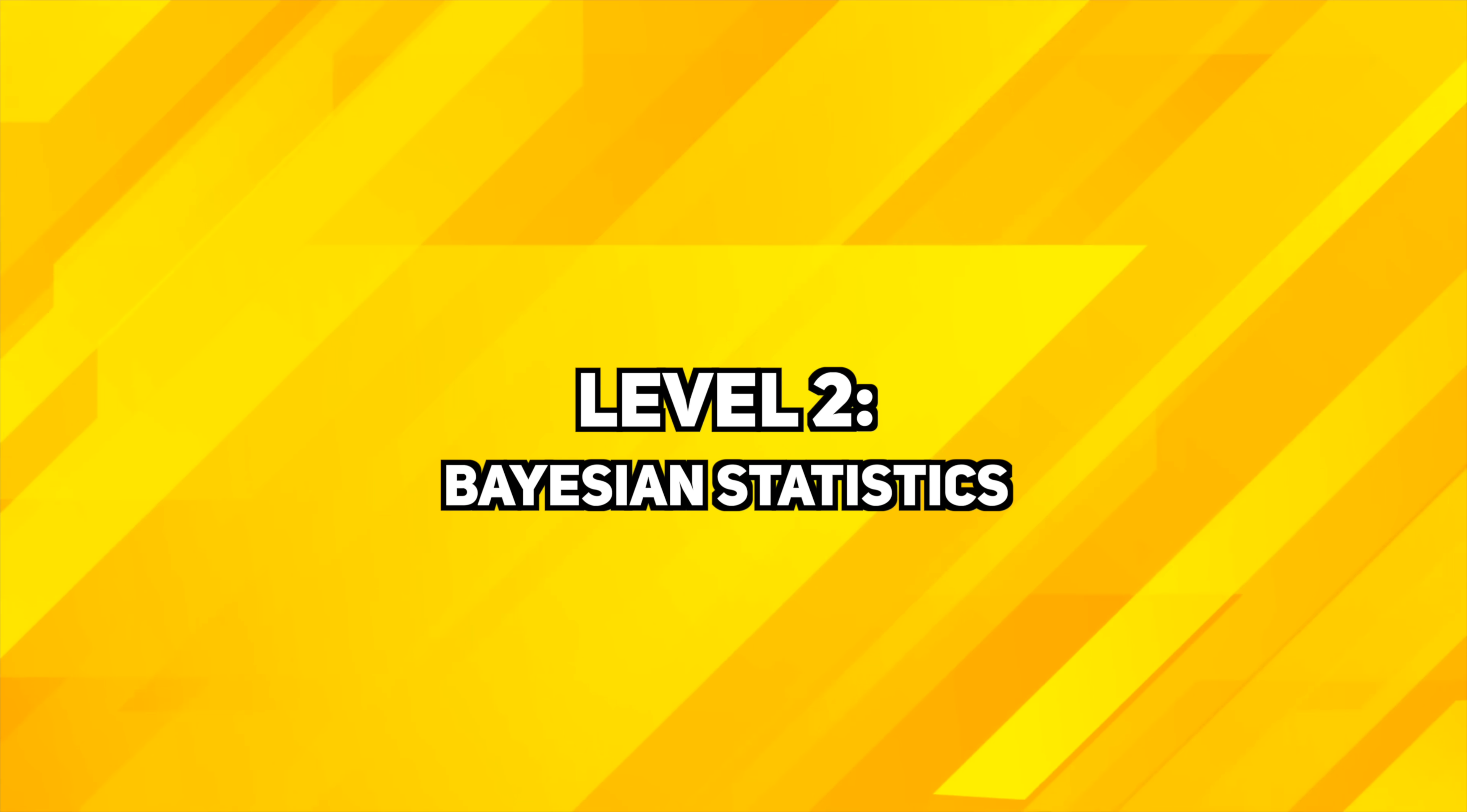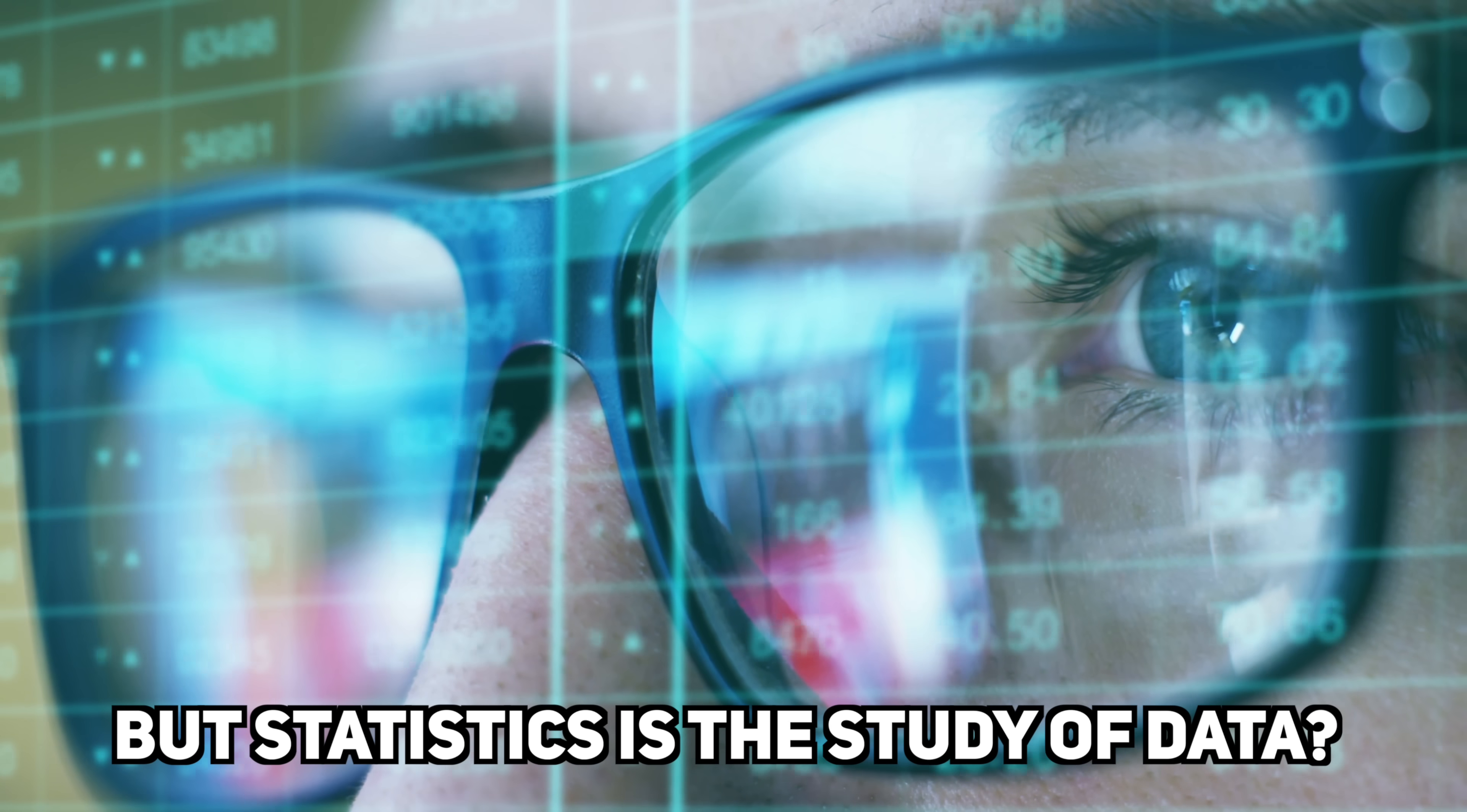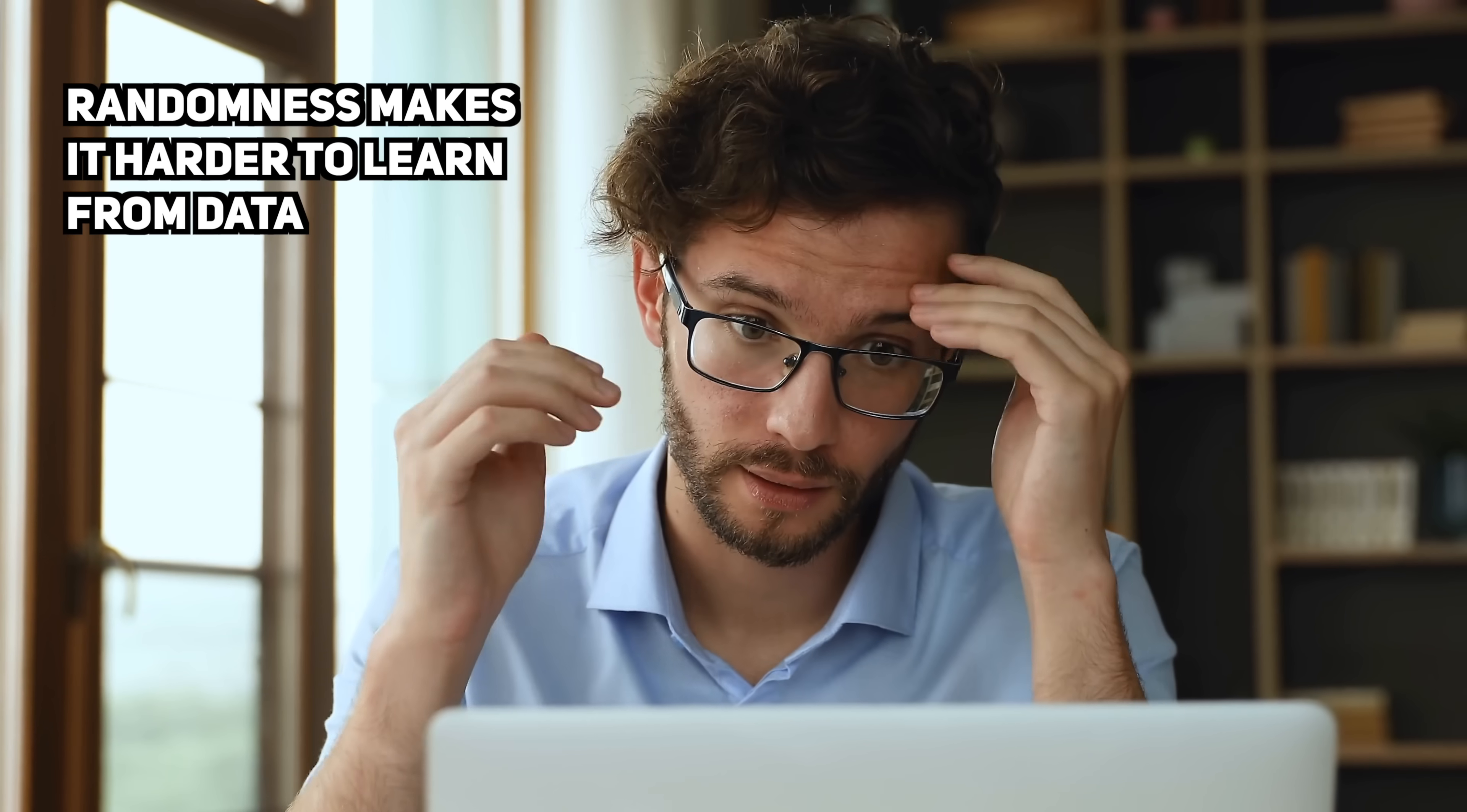Level 2. Bayes' statistics. Bayes' theorem tells us how to update our beliefs about events happening, but statistics is about making useful inferences and predictions from data through models of the world. So how do we make the jump from this to this? In statistics, we deal with data, and the inherent problem with data is that it's random. Randomness makes it harder to learn from the data.